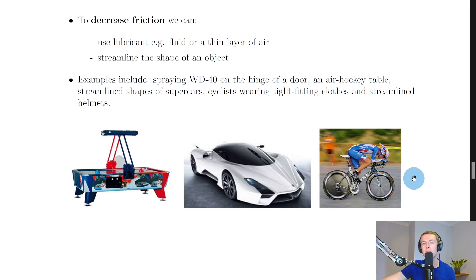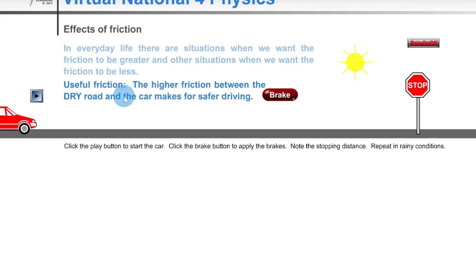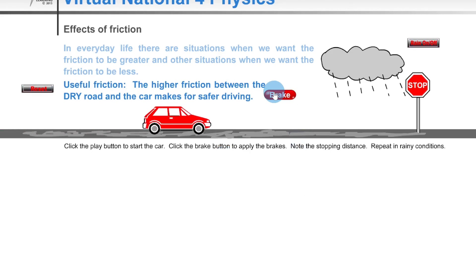Now I'm just going to show you a quick simulation to help you understand the effects of friction. So here we have useful friction, which is increasing friction, on the brakes of a car. If I click play, the car is moving, but I can apply the brakes to bring it to a stop fairly quickly. This is in nice dry weather conditions. But if we turn the rain on, this time you'll see that it takes longer for the car to come to a stop, because we have decreased the friction between the tires and the road.